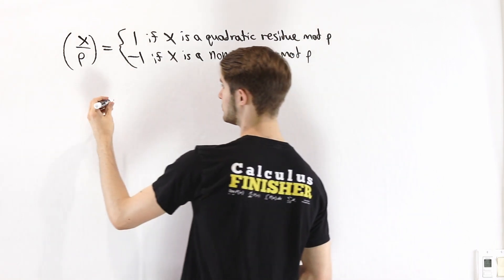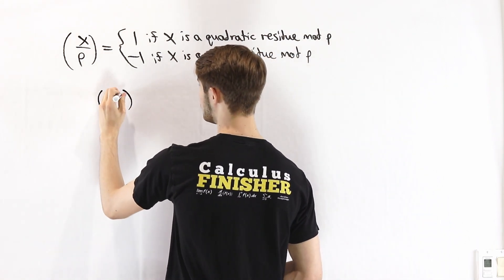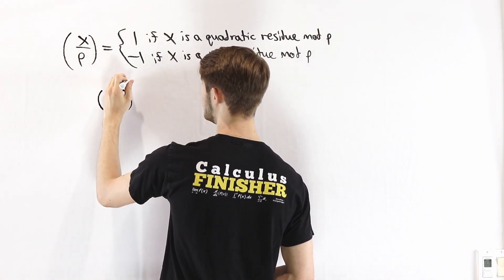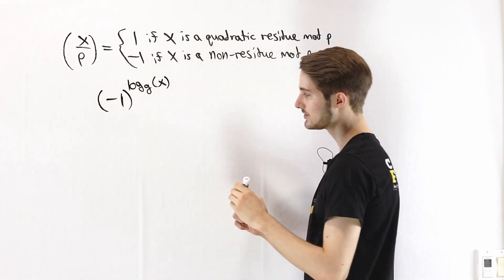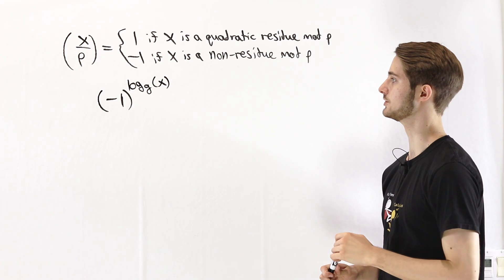What we're going to do is consider the following expression: (-1) to the power of log base g of x. So this is the index of x relative to the primitive root g.